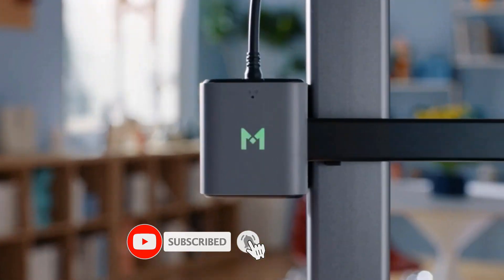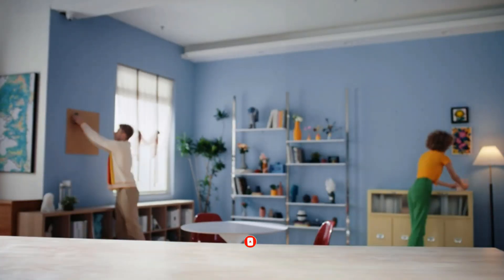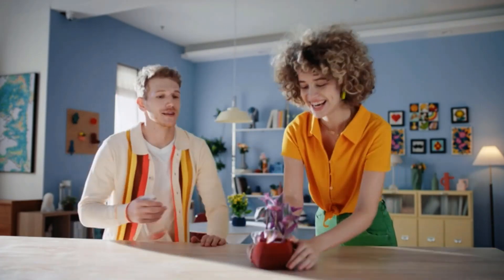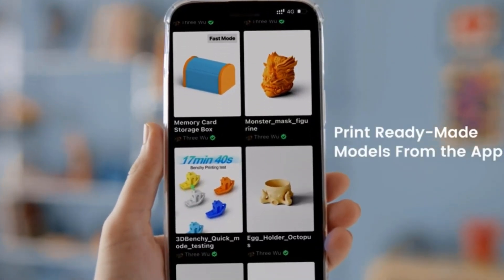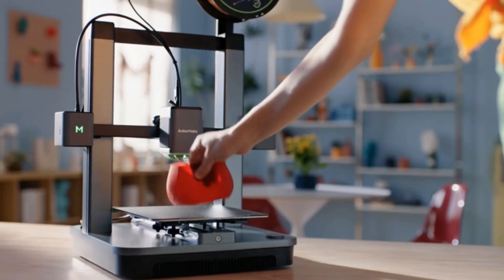Quality prints at high speed: with PowerBoost 2.0 technology and ultra direct extruder, AnkerMake M5C can achieve printing speeds of up to 500mm per second while maintaining 0.1mm precision, so you can create quality models faster and more efficiently.